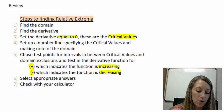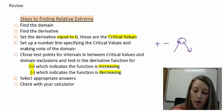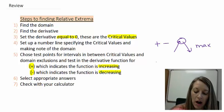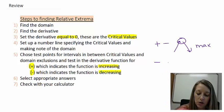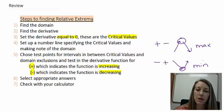Any time our graph went from increasing to decreasing, or going up to going down, that created a high point on our graph, which gave us a maximum. And any time our graph went from decreasing to increasing, or going down to going up, that gave us a low point on the graph, which gave us a minimum. That's how we found our relative extrema — maximums and minimums.